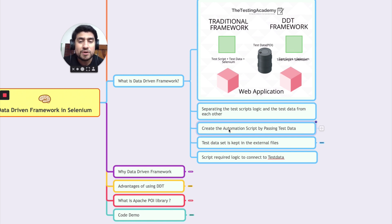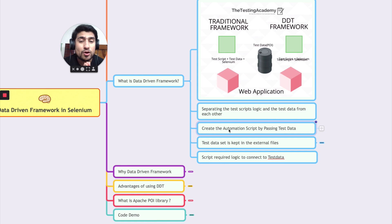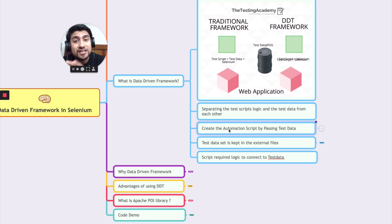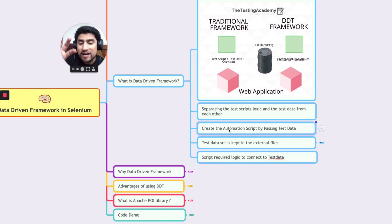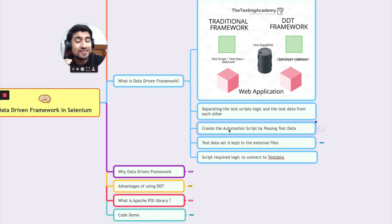We create automation by passing the test data separately. For example, suppose I have usernames and passwords for 10 persons and I want to iterate over them and try to log in to see if login is successful. That is exactly the demo we are going to do. You can achieve this in a traditional framework too, but you'd be writing long code with hard coding. In the DDT framework you have a separate test data class, so your test data is fetched and your test script runs based on multiple sets of test data.